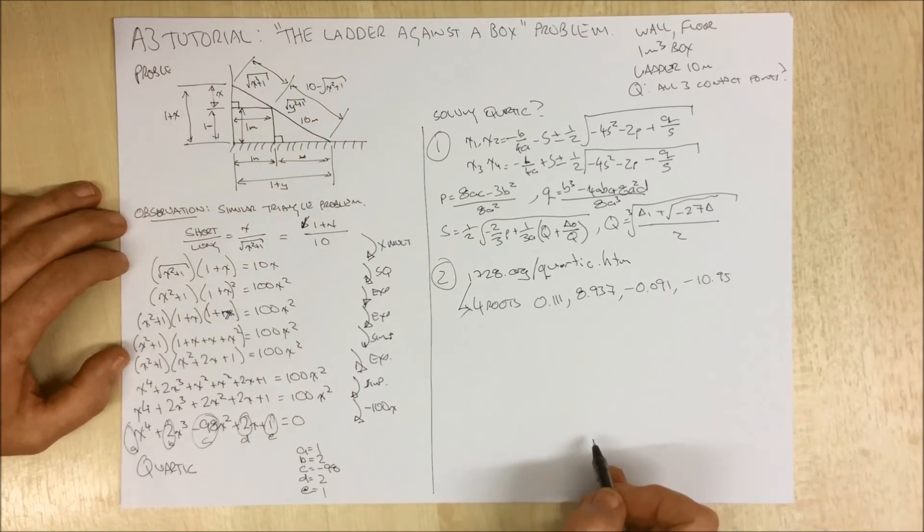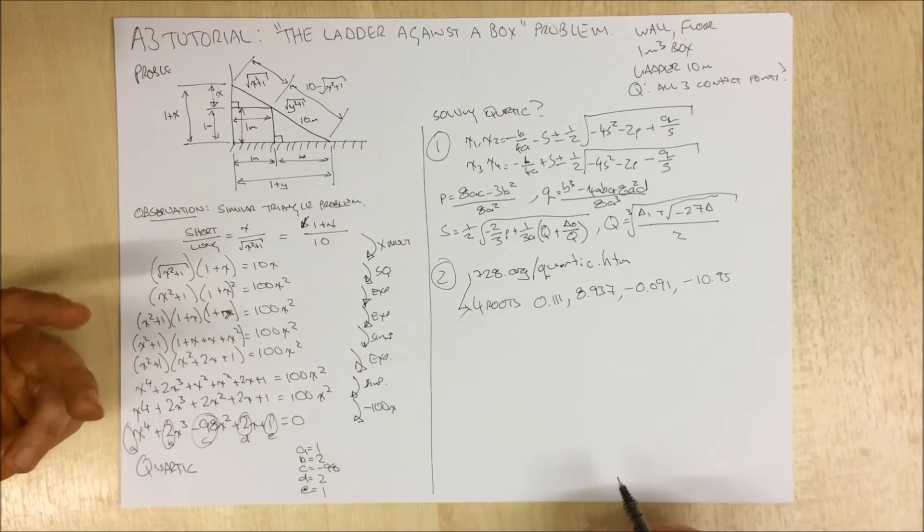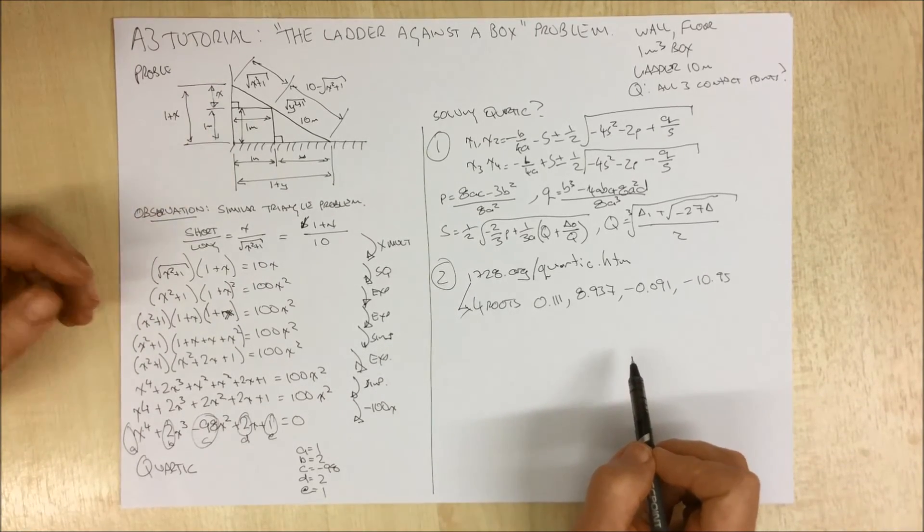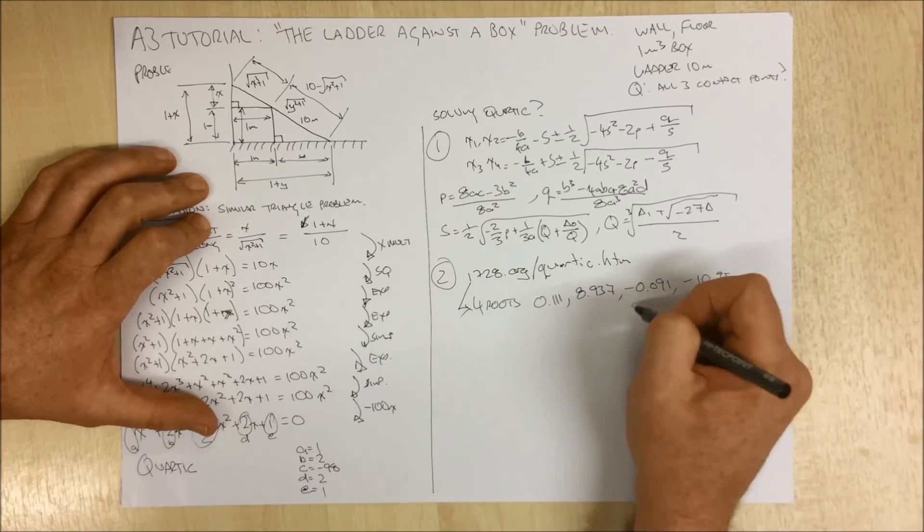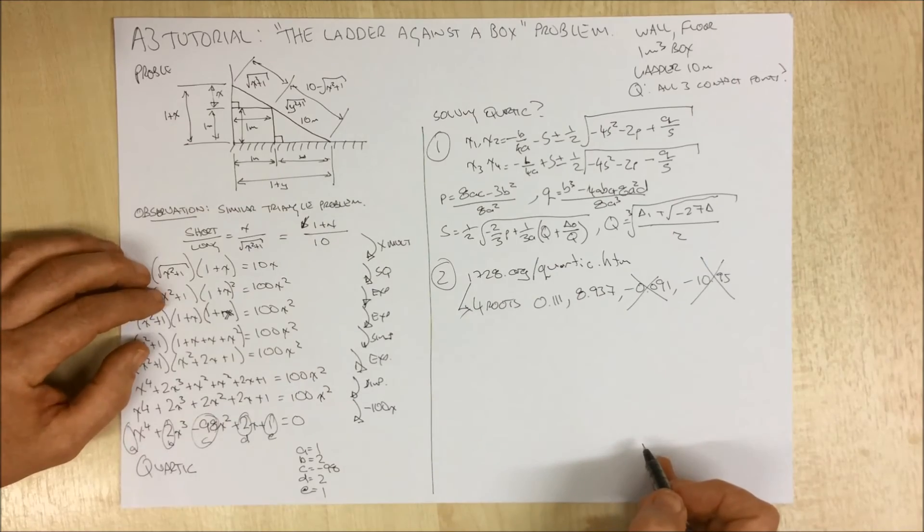Now a couple of things leap out at us here. The first one is we're after two numbers. We've got four roots. The second one, these are negatives. Obviously we can't have negative height. These are unrealistic, so we can forget about them. It makes life nice and easy. We've got these two roots left over.